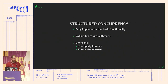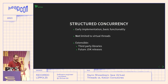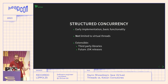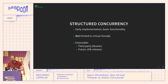It's an early implementation, so the API is still basic, but it gives a nice way of structuring concurrency to make it easier to reason about. It's not limited to virtual threads — by default it starts virtual threads for forked tasks, but you can provide your own thread factory. The idea is that this becomes extensible and will improve in future JDK releases, with third-party libraries able to build on top.